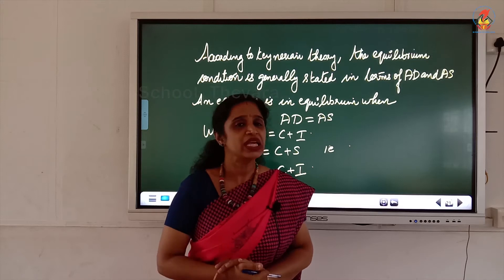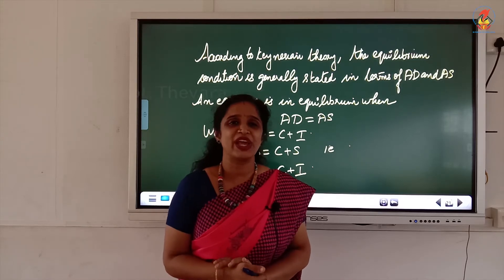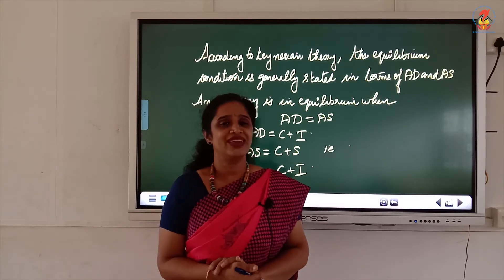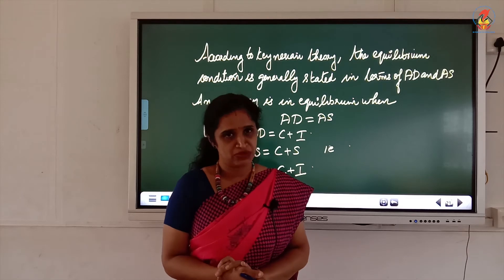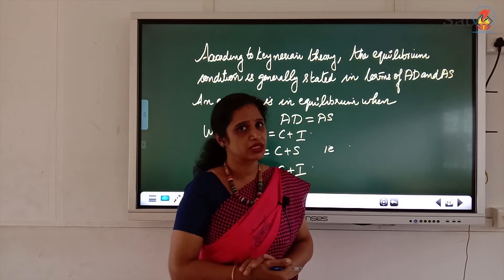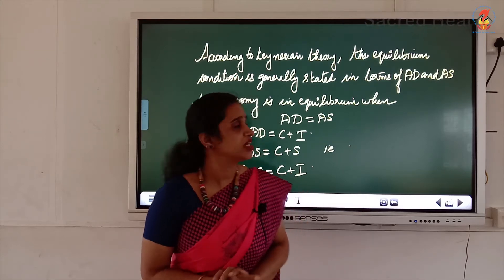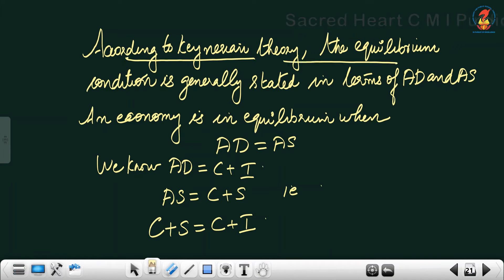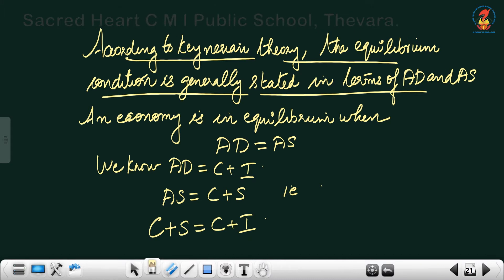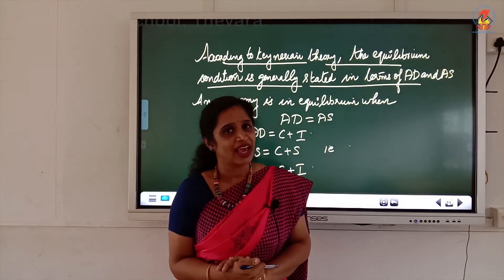Keynes explained his theory based on certain assumptions. In economics, we normally start the explanation of theories using some assumptions. According to Keynesian theory, the equilibrium condition is generally stated in terms of AD and AS — a point where aggregate demand is equal to aggregate supply.